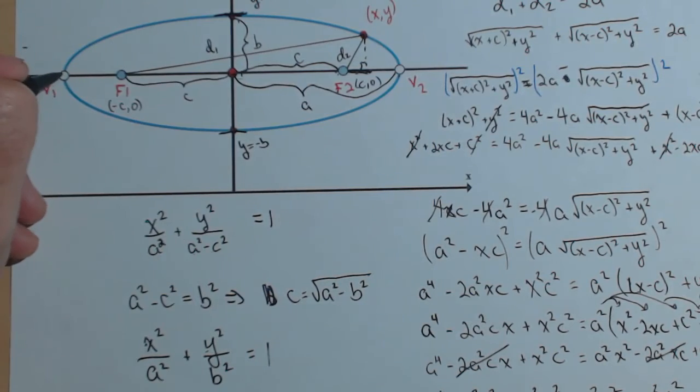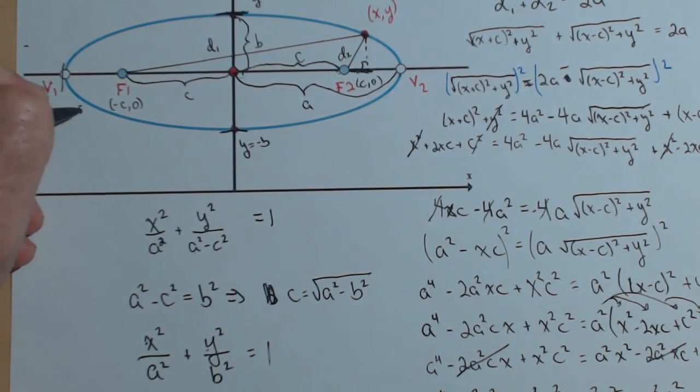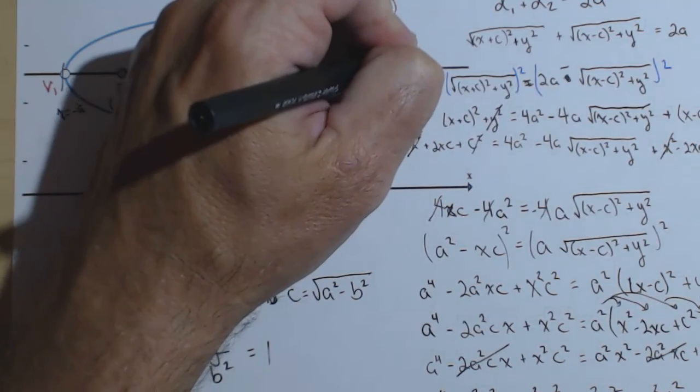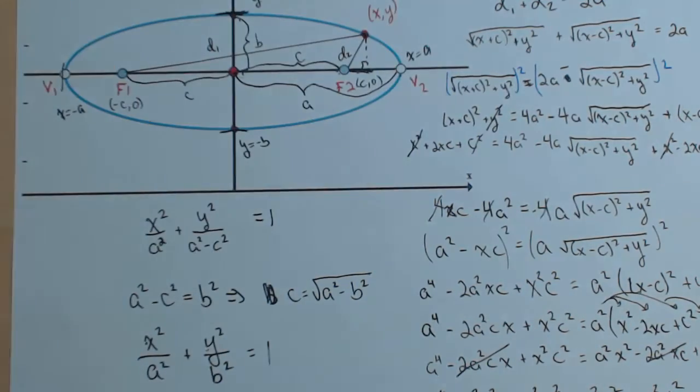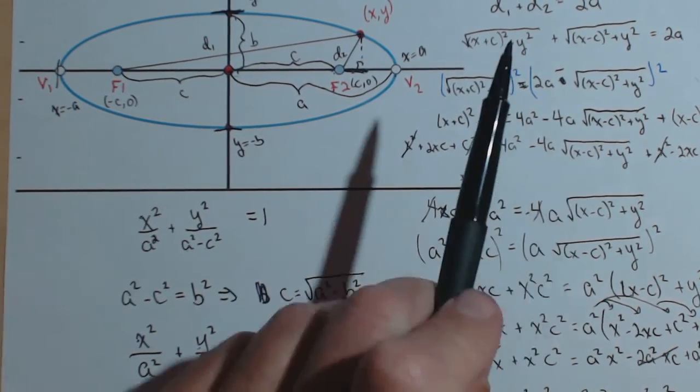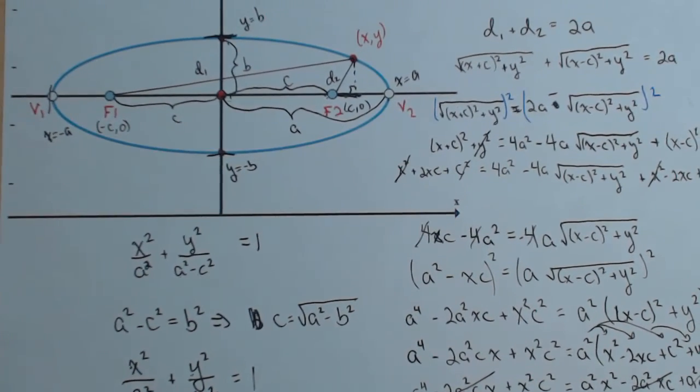Real similarly, we could see that this is the vertical line, x equals negative a, and x equals a. So, a lot of these things that are going on in our ellipse come from the definition of an ellipse.